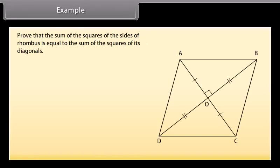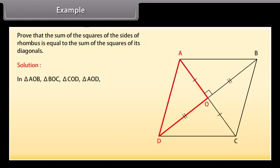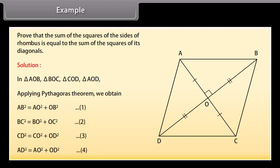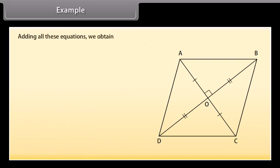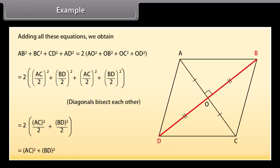Example: Prove that the sum of the squares of the sides of a rhombus is equal to the sum of the squares of its diagonals. Solution: In triangles AOB, BOC, COD, and AOD, applying Pythagoras theorem, we obtain these values. By adding all these equations, we obtain AB² + BC² + CD² + AD² = AC² + BD².